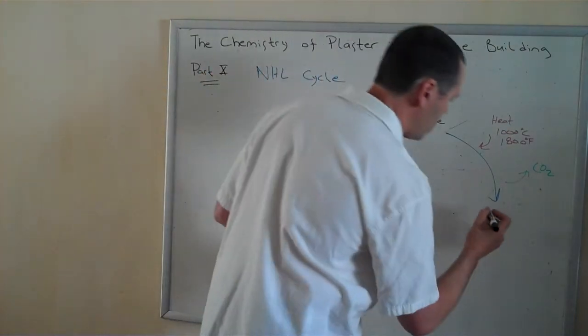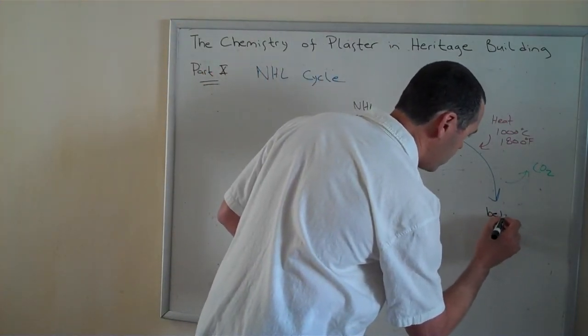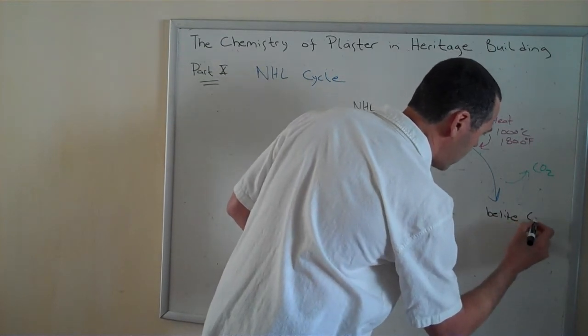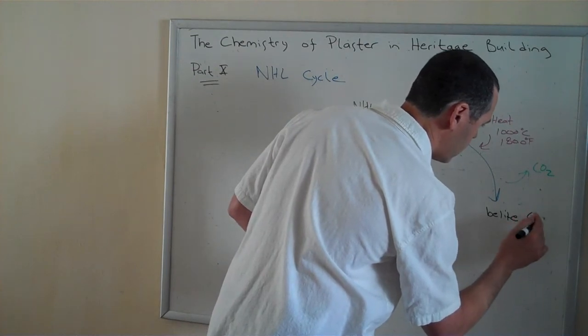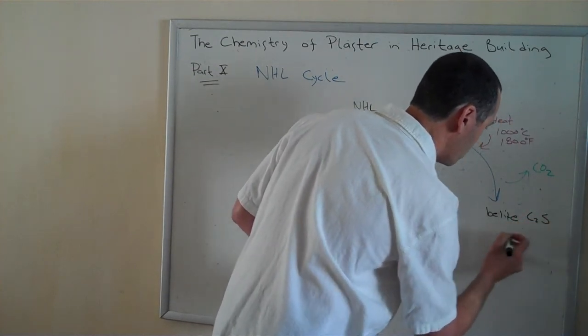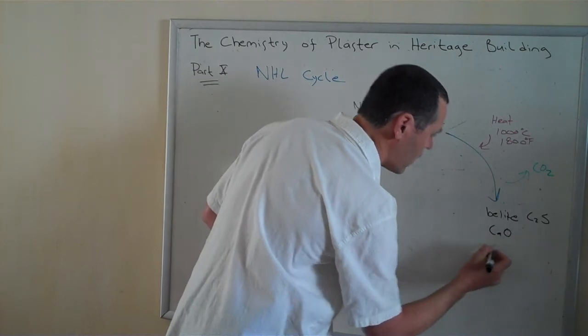Resulting material is a mixture of the bellites, which we discussed were calcium disilicates, di-calcium silicate, and calcium oxide, or quicklime.